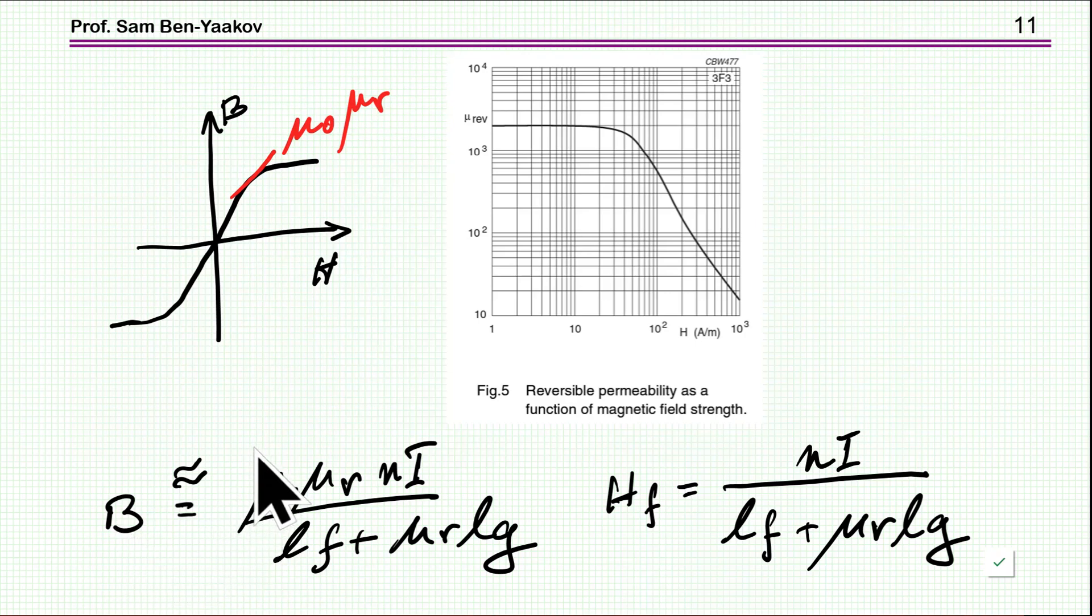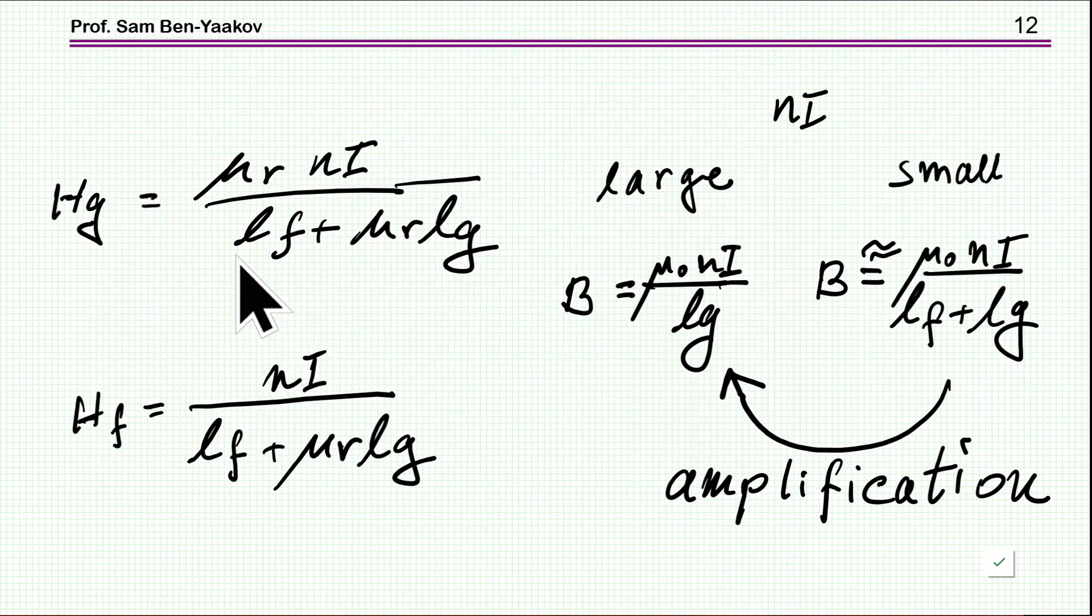On the other hand, if now H, B, and H are increasing, μᵣ is decreasing, then B becomes smaller and smaller. So let's look at the details of it. Here's the expression, and what I'm saying is that if the permeability is large, that we are at a low nI, then this term is much larger than this and this drops out. What we get here is B. You have to multiply this by μ₀. So B is μ₀nI over lg. lg being a small number, it's a gap, B is large.